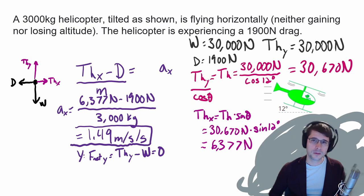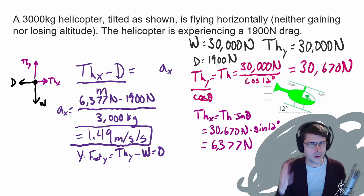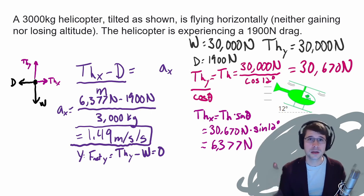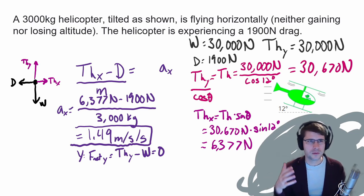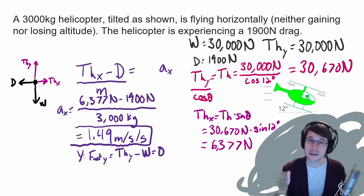To break things down: start by drawing the force diagram. If there are any diagonal forces, break them into components. Once you have components, write the sum of forces equations in two directions — typically the direction of acceleration and the perpendicular direction, in this case X and Y. Then fill in as many forces as you can, figure out which ones you need to find the acceleration, and plug in to get the answer.